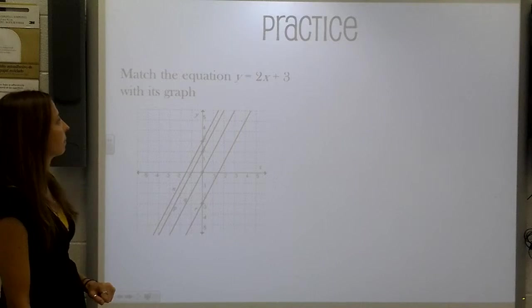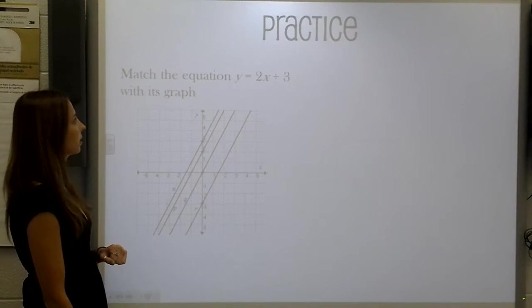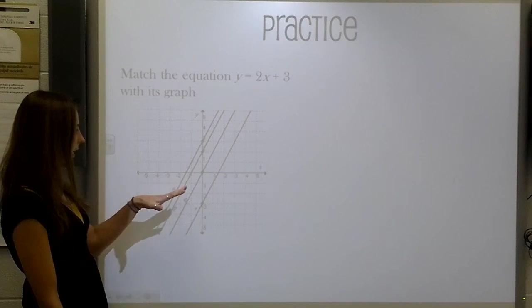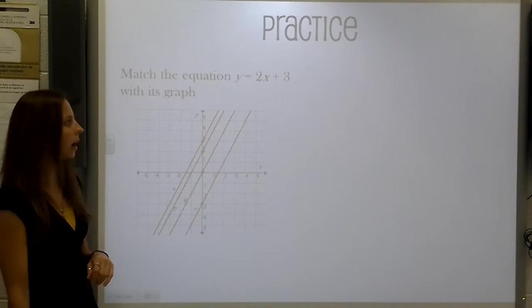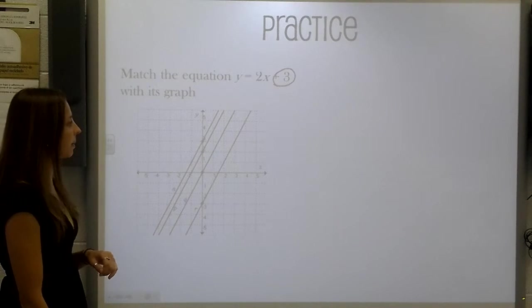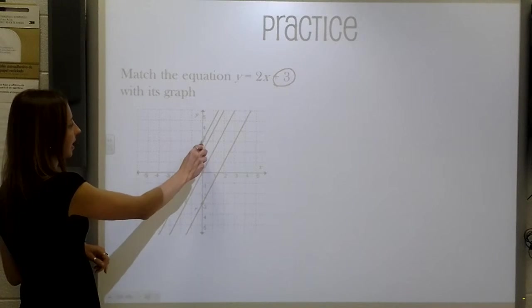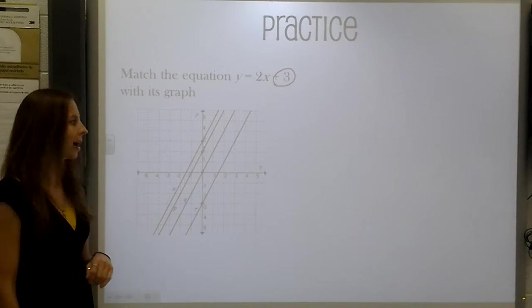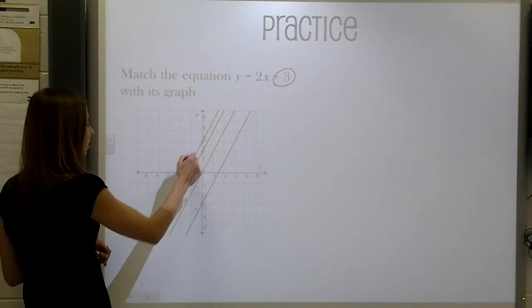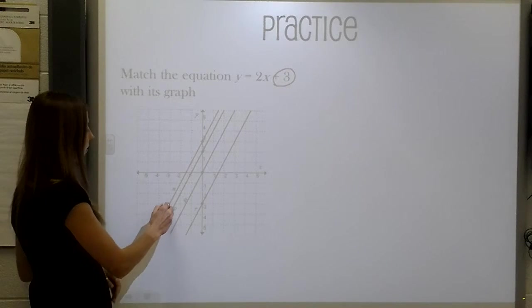One more example. Match the equation y equals 2x plus 3 with the graph. Well, the first thing I'm going to do to solve this problem is look at my y-intercept, which is a positive 3. And only one graph on this line has a positive 3 y-intercept. So this question is actually very simple. Line n, this first line right here, is the line that matches that equation.